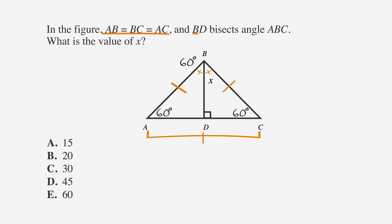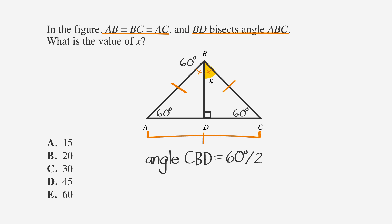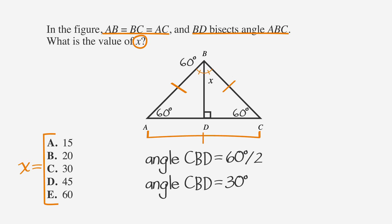This means each of the angles is 60 degrees. The problem also says that BD bisects angle ABC, meaning angle ABC is cut into two equal halves. If angle ABC is 60, then angle CBD is half of 60, which means angle CBD is 30 degrees. X corresponds with angle CBD, so X is 30 degrees and the correct answer is C.